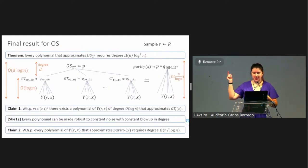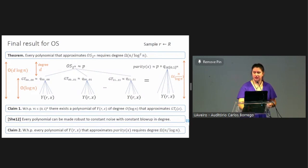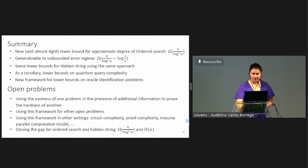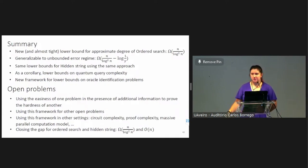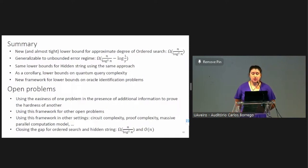Putting everything together, we have shown claims 1 and 2 — that greater-than has low degree, and parity still has high degree — so we get that ordered search requires degree n over log squared of n. To summarize our work: we give new and almost tight lower bounds for approximate degree of ordered search, we generalize this to the unbounded error regime with tight dependency on the error parameter, we show the same lower bounds for hidden string using the same approach, and all of these lower bounds also imply lower bounds on quantum query complexity for both decision and reconstruction versions. In general, we introduce a new framework for lower bounds on oracle identification problems.